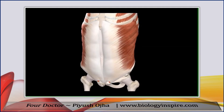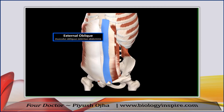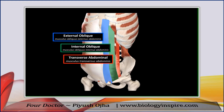Here we see the anterior view of the abdomen. I've cut through all the muscles of the abdomen in order to see them all. The most external muscle of the abdomen is the external oblique muscle, then there's the internal oblique muscle, and then there's the transverse abdominal muscle. These three muscles are part of the lateral abdominal muscles, or the lateral group. The muscles of the abdomen are organized into three groups, and these are the lateral group.